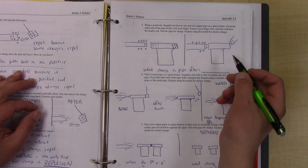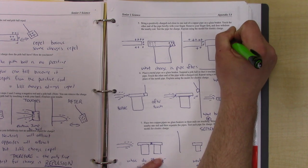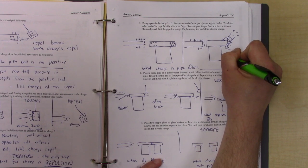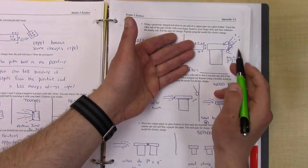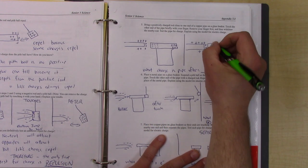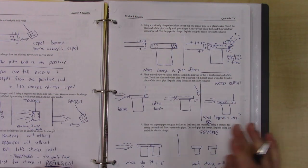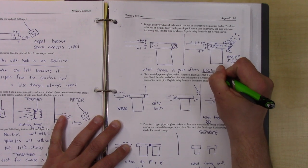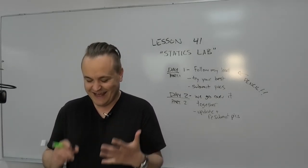Then when you touch the other end, the negatives in your hand want to jump toward the positive rod through the metal conductor. Your finger's electrons also jump in, so now there are a ton of negatives on this side and only a few positives on the other. When you remove everything, you've made a negative rod using a positive rod — that's induction 2.0.